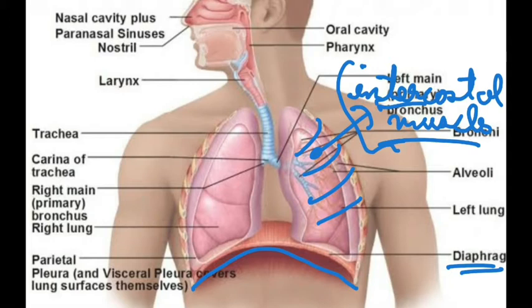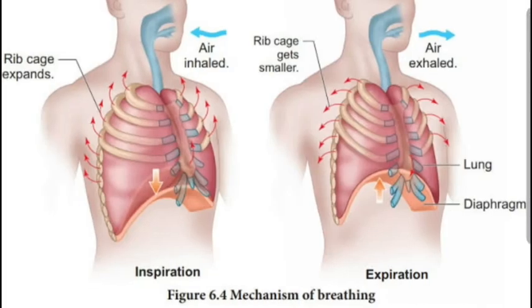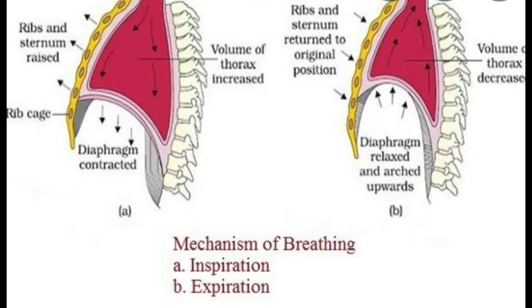Inspiration is initiated by the contraction of the diaphragm, which increases the volume of the thoracic chamber in the anterior-posterior axis. The external and internal intercostal muscles lift up the ribs and the sternum, causing an increase in the volume of the thoracic chamber in the dorsal-ventral axis. Since the pulmonary volume is located in the thoracic chamber, an overall increase in thoracic volume causes a similar increase in pulmonary volume, decreasing intra-pulmonary pressure to less than atmospheric pressure, which forces air from outside to move into the lungs — inspiration.